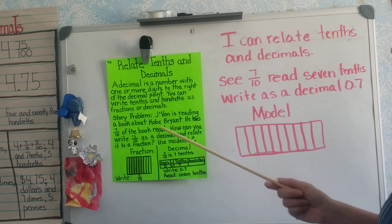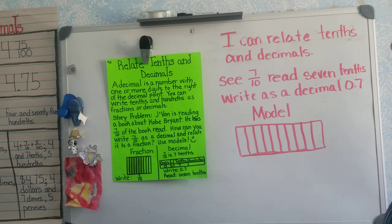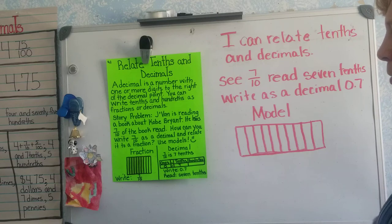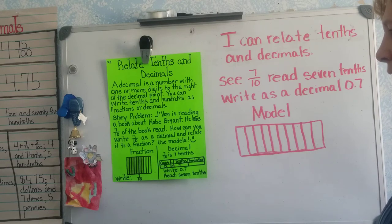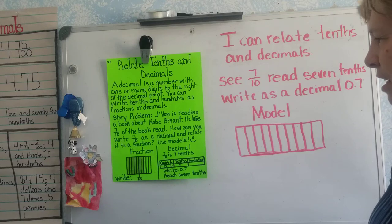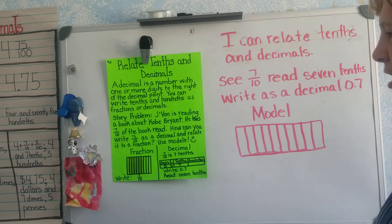We have a story problem. Javon is reading a book about Kobe Bryant. He has seven tenths of the book read. How can you write seven tenths as a decimal and relate it to a fraction?